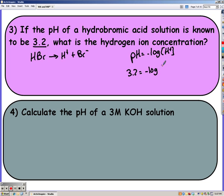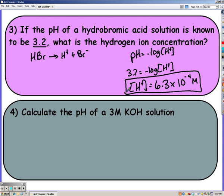So remember, to solve this, you would need to do 10 to the negative pH. When you do 10 to the negative 3.2, you get 6.3 times 10 to the negative fourth molarity.